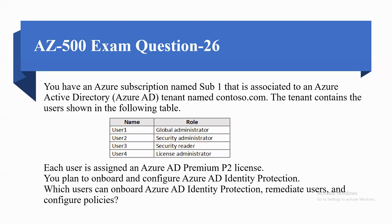Coming to the next question. You have Azure subscription Sub1 associated with an Azure AD tenant named contoso.com. The tenant contains users as follows: User 1 is Global Administrator, User 2 is Security Administrator, User 3 is Security Reader, and User 4 is License Administrator. Each user is assigned an Azure AD Premium P2 license. You plan to onboard and configure Azure AD Identity Protection. Which users can onboard Azure AD Identity Protection, remediate users, and configure policies?